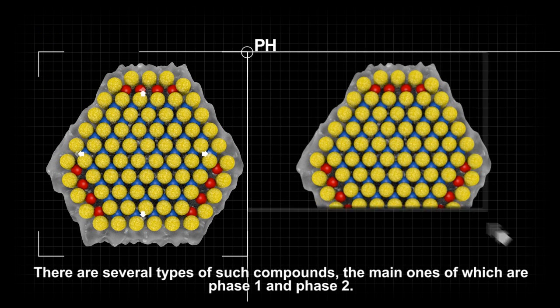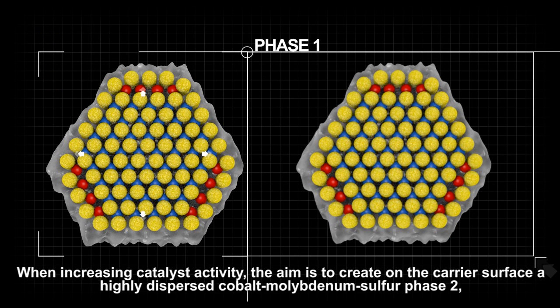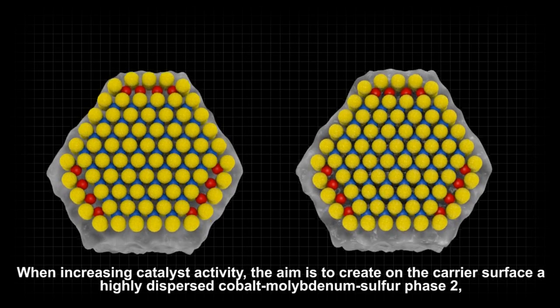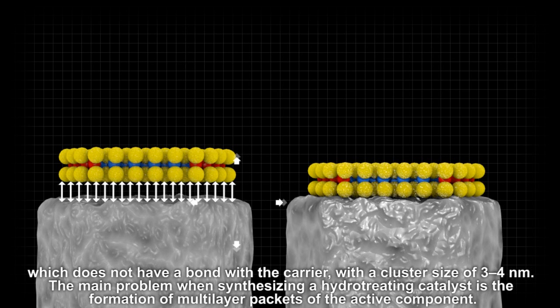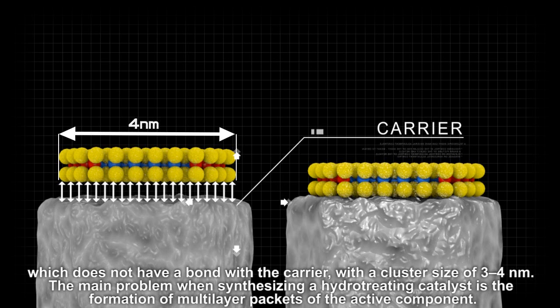the main ones of which are phase 1 and phase 2. When increasing catalyst activity, the aim is to create on the carrier's surface a highly dispersed cobalt molybdenum sulfur phase 2, which does not have a bond with the carrier, with a cluster size of 3 to 4 nanometers.